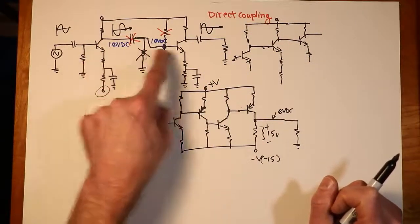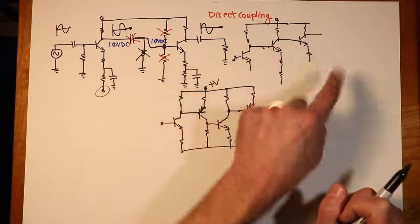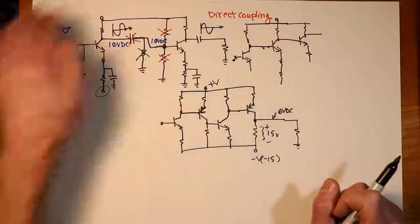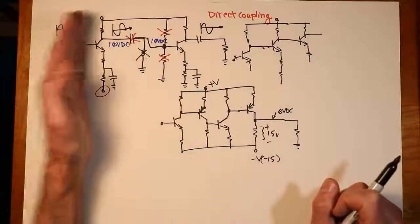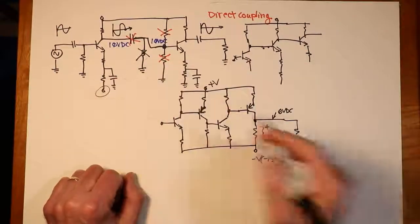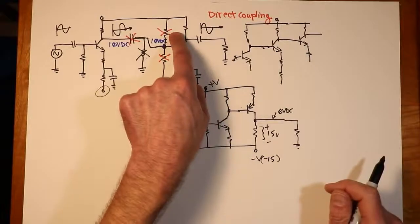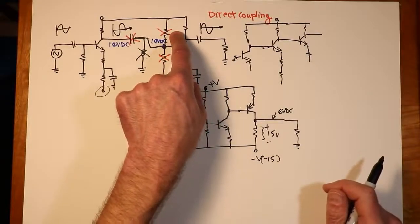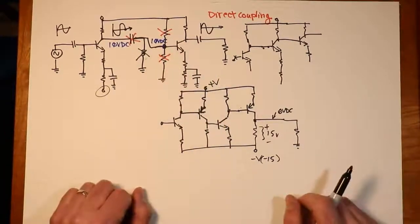So to recap, gain, we simply multiply the gains of the various stages together. The input impedance of the system is the input impedance of the first stage, and as you might guess, the output impedance is the output impedance of the last stage.